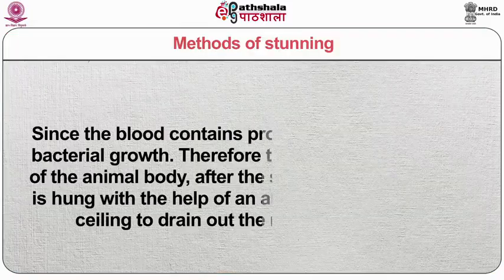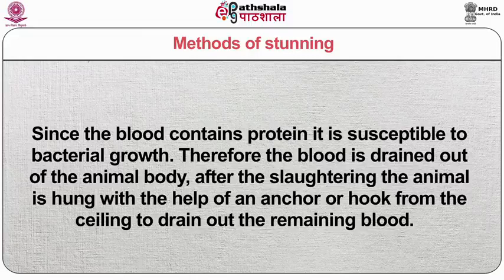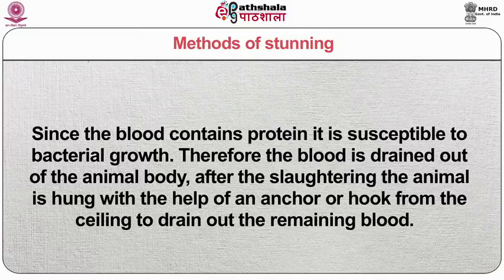Slaughtering: this process is done immediately after the animal is stunned, not because the animal will regain consciousness, but because at this time the blood pressure rate is very high, which helps to drain out the blood from the animal body easily. Bleeding: since blood contains protein it is susceptible to bacterial growth. Therefore the blood is drained out of the animal body after slaughtering. The animal is hung with the help of an anchor or hook from the ceiling to drain out the remaining blood.